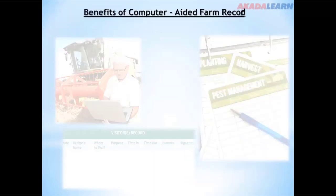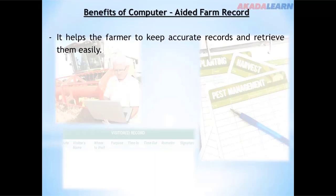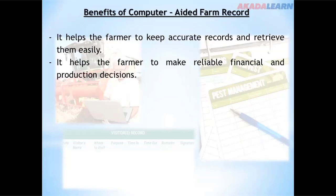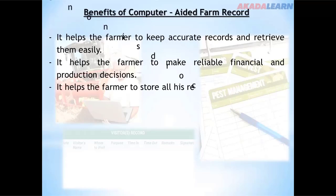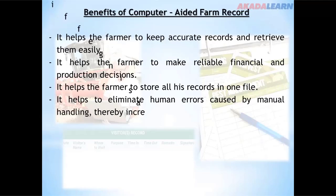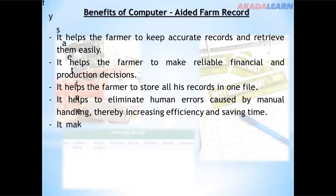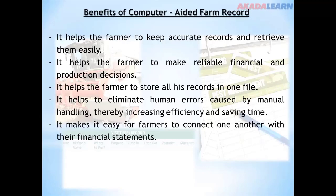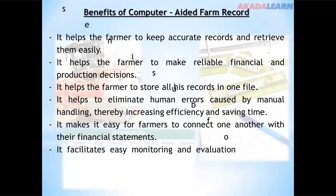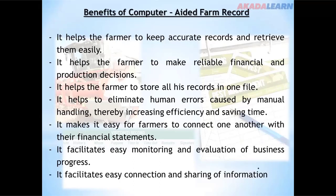Benefits of computer-aided farm records: they help the farmer to keep accurate records and retrieve them easily, make reliable financial and production decisions, and store all records in one file. They help eliminate human errors caused by manual handling, thereby increasing efficiency and saving time. They also make it easy for farmers to connect with one another through financial statements, and facilitate easy monitoring, evaluation, and sharing of information.